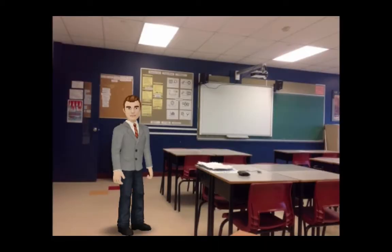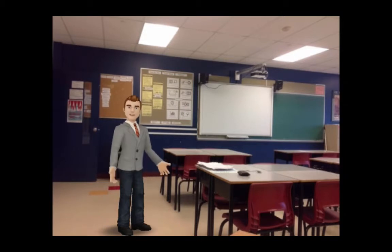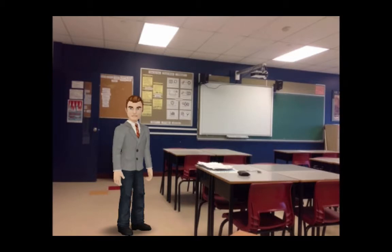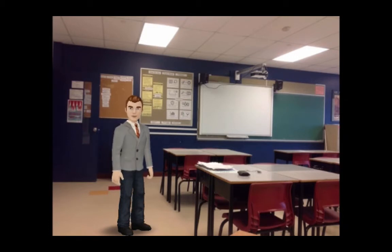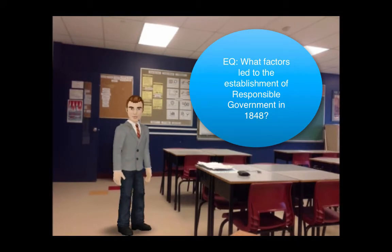Hi there and welcome to video number six. Today we start unit number five, which is the formation of the Canadian Federation. In this unit we're going to look at the years 1850 all the way up until 1929. Today we're going to talk about responsible government and its establishment in 1848. Today's essential question is: what factors led to the establishment of responsible government in United Canada in 1848?